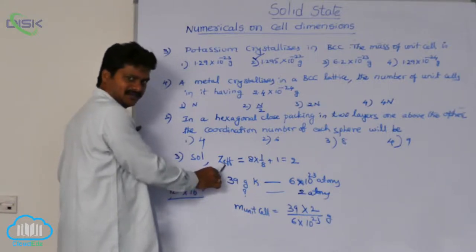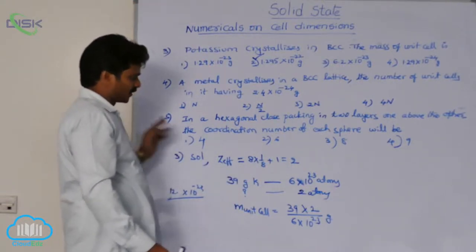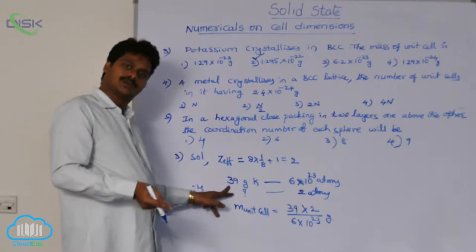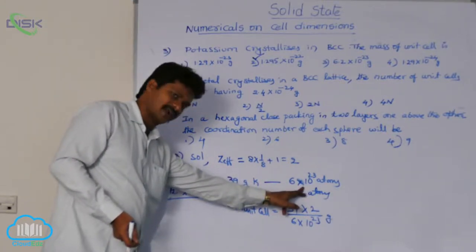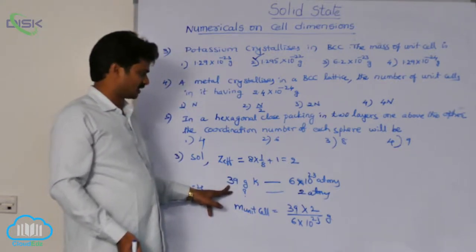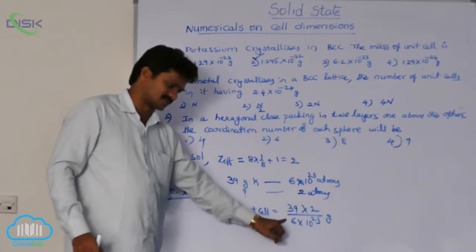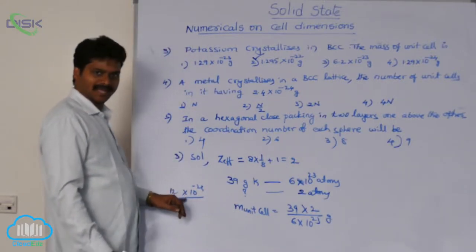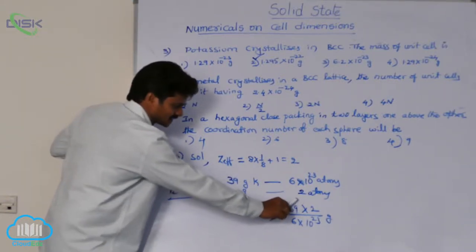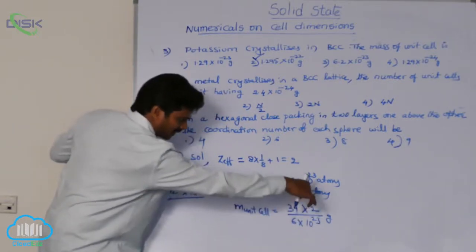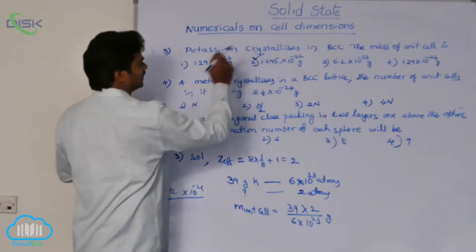To recap: I calculated the effective number of atoms per unit cell because potassium crystallizes in BCC, giving 2 effective atoms. We know that Avogadro's number of atoms has mass equal to the molar mass — the gram atomic weight of potassium is 39. So Avogadro's number of atoms has mass 39 grams; per unit cell there are only 2 atoms. By cross-multiplication, the answer is 12-point-something × 10⁻²³, or 1.2-something × 10⁻²² grams — second option.